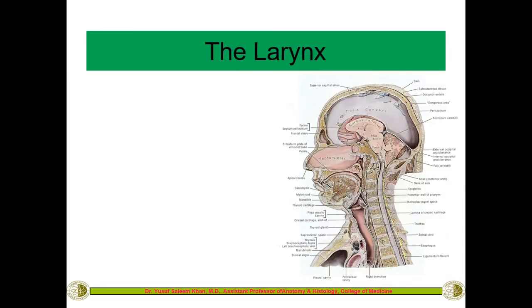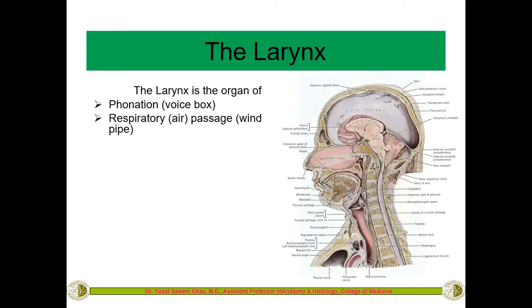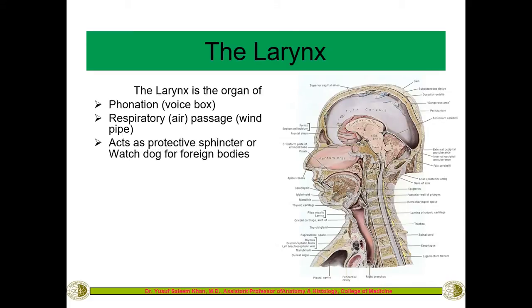We will begin with the larynx. The larynx is an organ of phonation — it produces voice, which is why it is called the voice box. It is also a passage for respiration, so it is also called the windpipe or air passage. It has two main functions: it produces voice, and it is a respiratory passage. It also acts as a protective sphincter for foreign particles, which is why it is called the watchdog for foreign bodies.